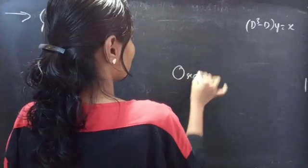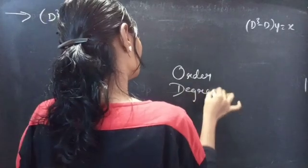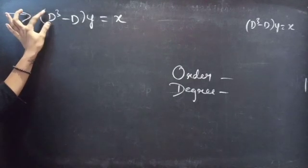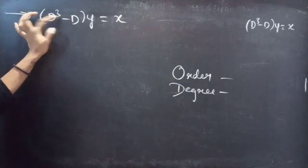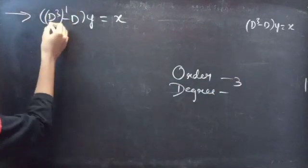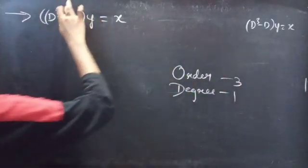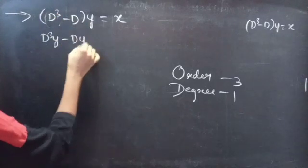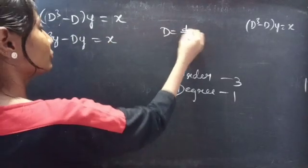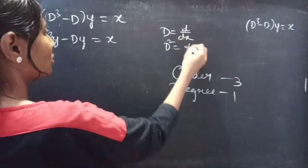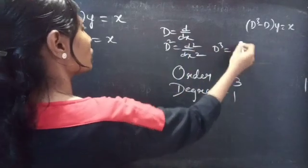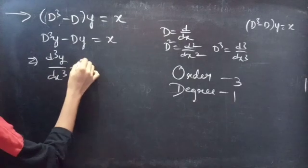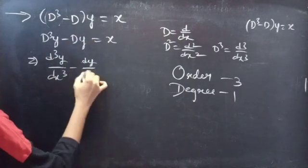First, let's find the order and degree of the given differential equation. Identify the highest derivative — D³ is the highest derivative. So 3 will be our order, and the highest power of the highest derivative is the degree, which is 1. We can write the equation as d³y/dx³ minus dy/dx equals x.